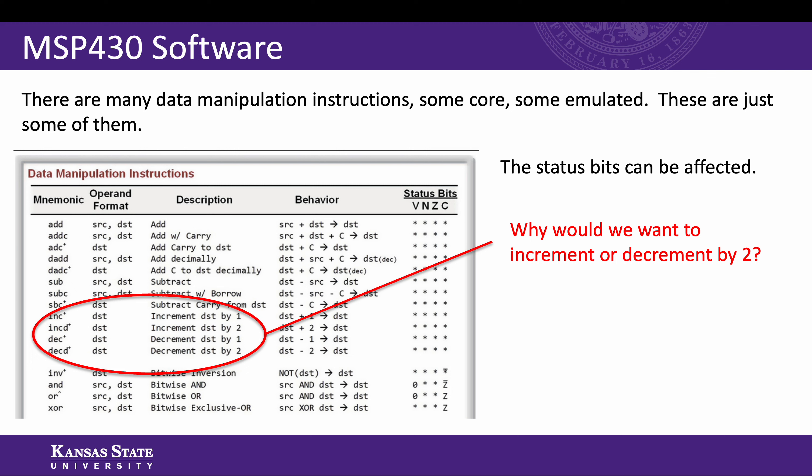Why would we want to increment or decrement by two? You might want to pause the video if you want to think about it. But here's the answer: you might recall that each word in memory is two bytes wide and occupies two memory addresses.